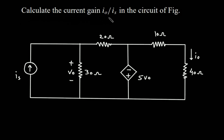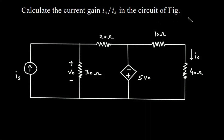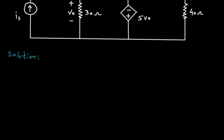Calculate the current gain IO by IS in the circuit of figure. We will redraw the circuit.